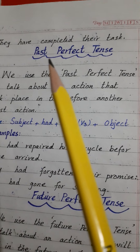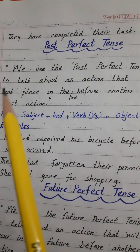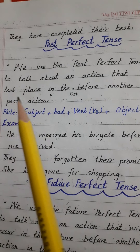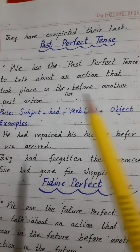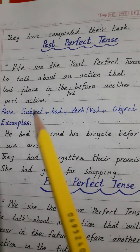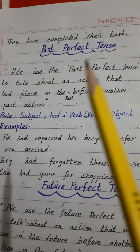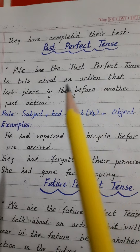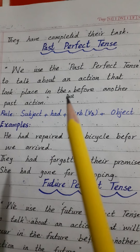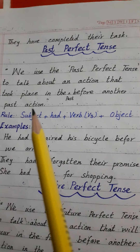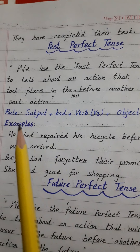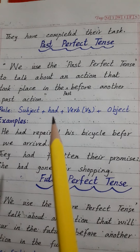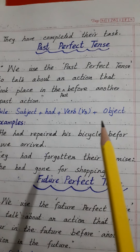Let's learn about past perfect tense. We use the past perfect tense to talk about an action that took place in the past before another past action. Hum past perfect tense tab use karte hain jab hum kisi aise kaam ko zahir karna chahein jo ke guzre zamane mein hua ho kisi past action se pehle. The rule of its making is: subject + had + third form of verb + object.